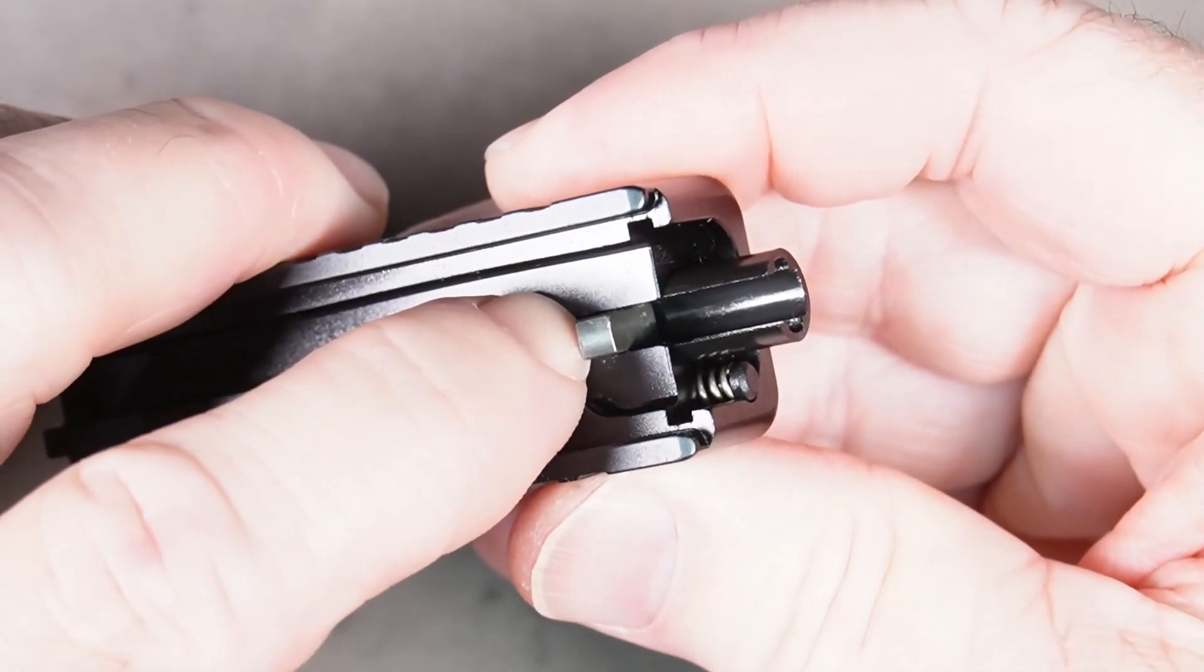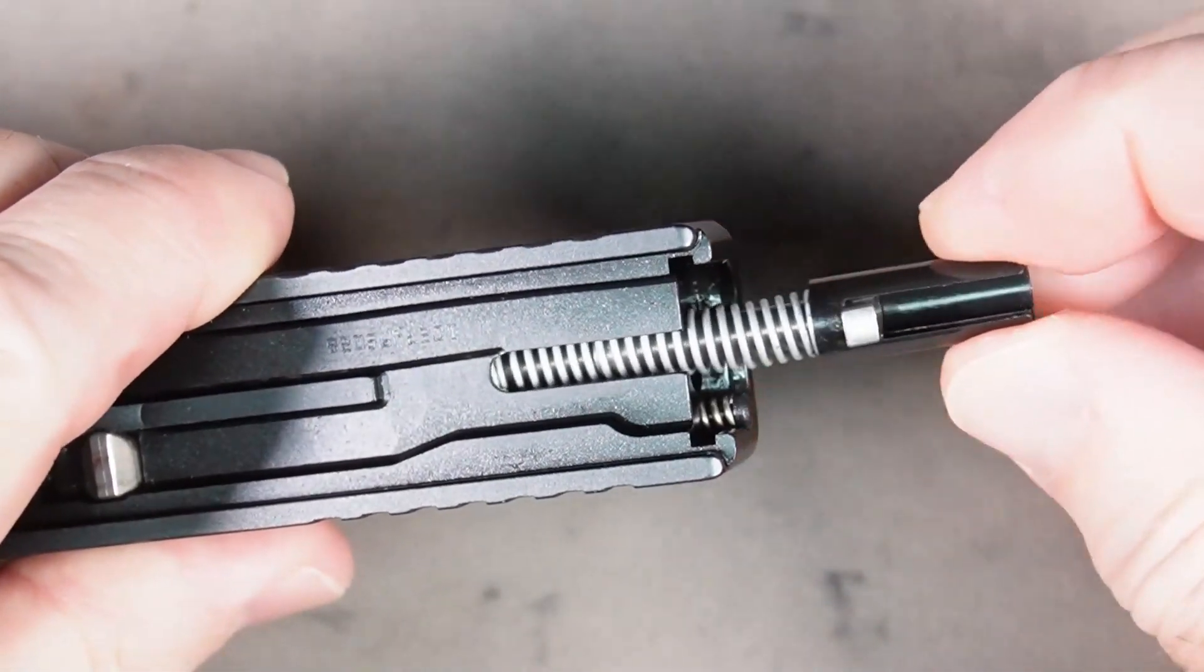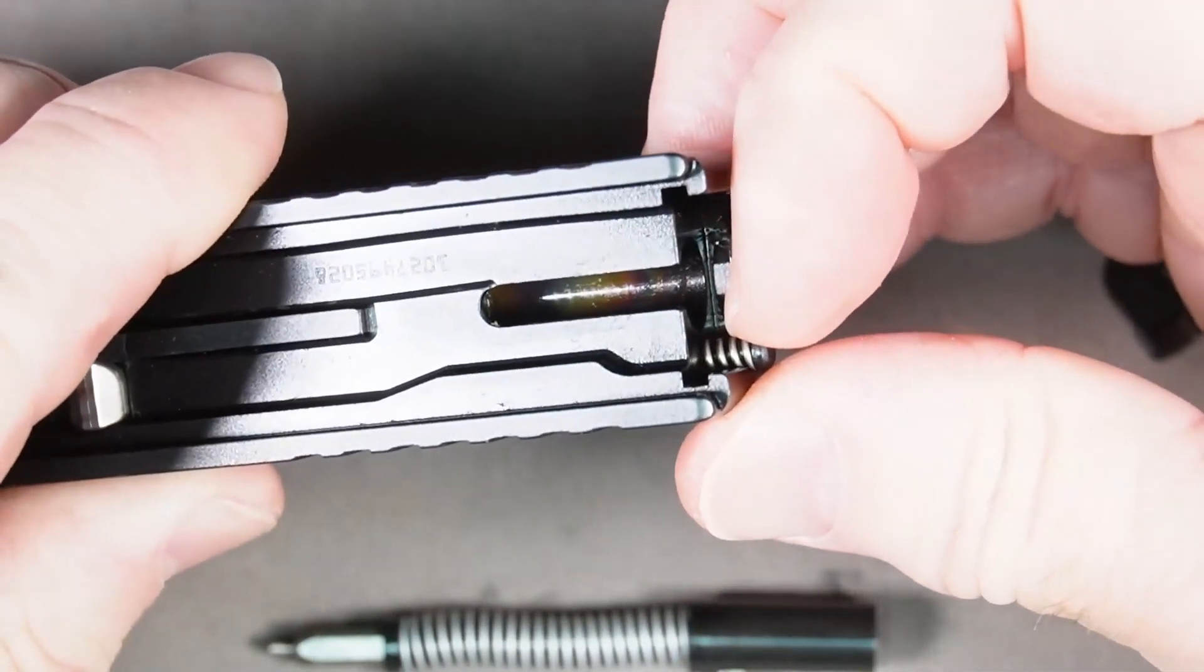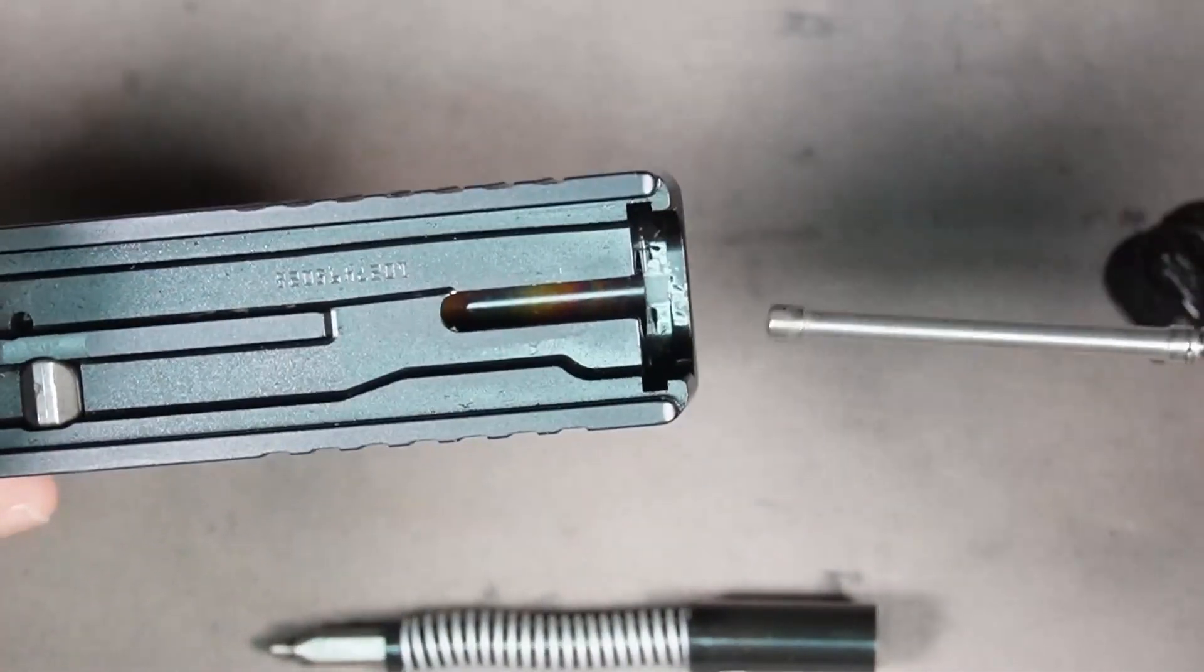And now you can push the firing pin assembly right out of the gun like that. Then you can grab the plunger and pull that out.